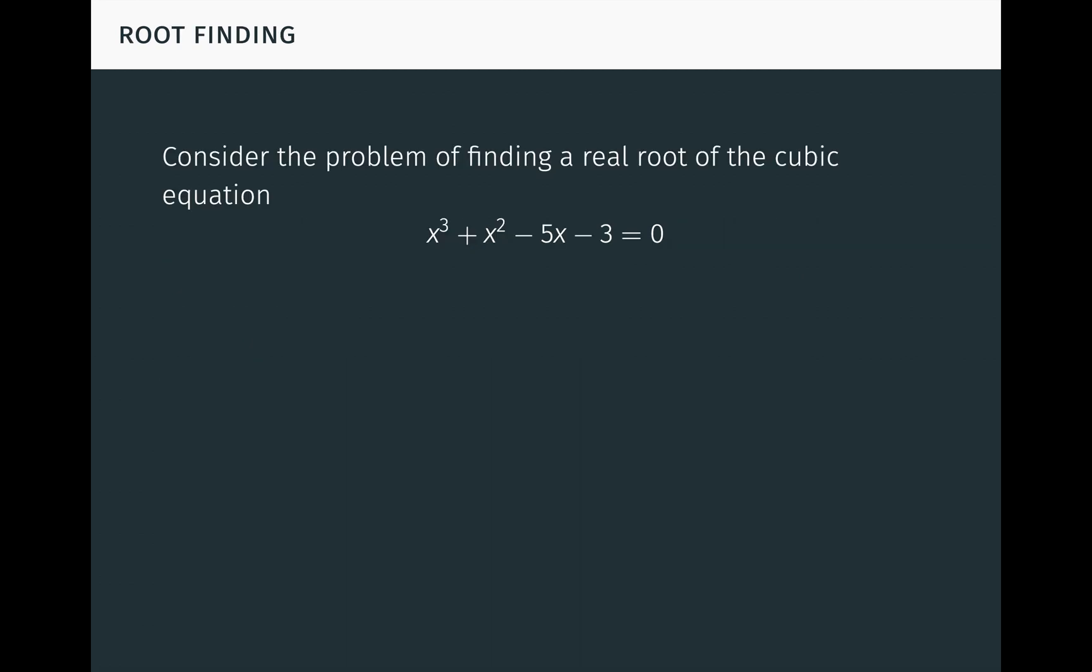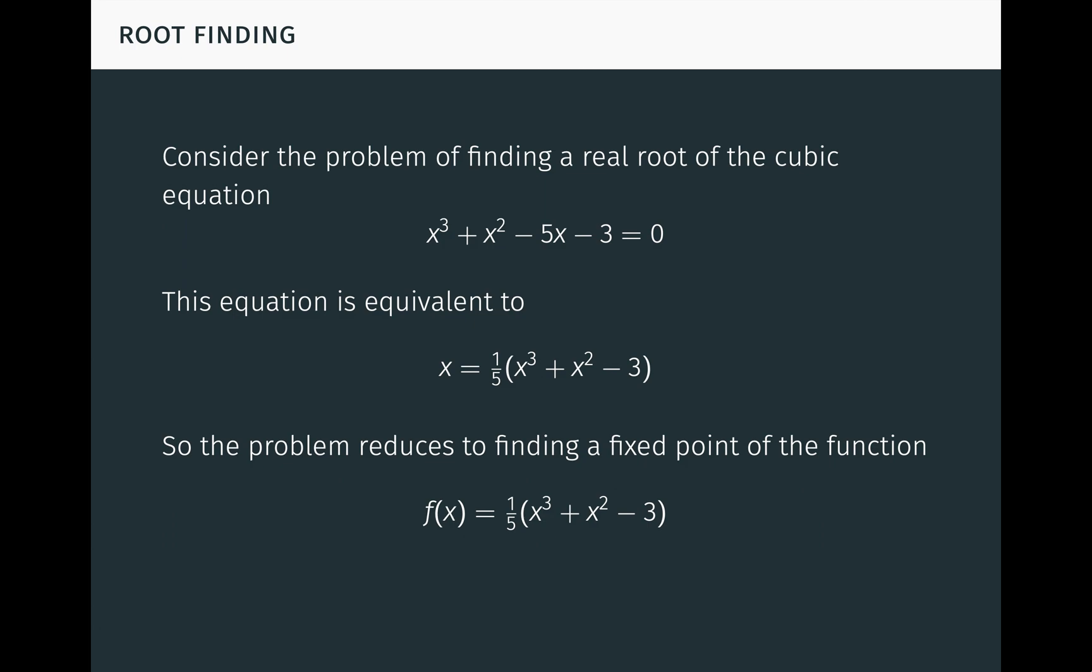For example, consider the problem of finding a real root of the cubic equation x cubed plus x squared minus 5x minus 3 equals 0. By doing a little algebra, we see that this equation is equivalent to x equals one-fifth times the quantity x cubed plus x squared minus 3. So the problem reduces to finding a fixed point of the function f equals one-fifth times the quantity x cubed plus x squared minus 3.